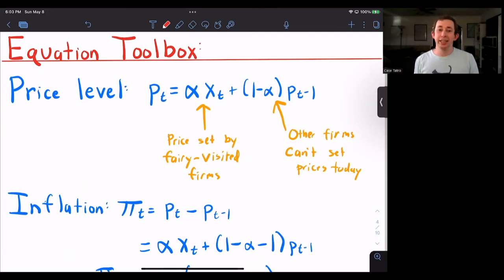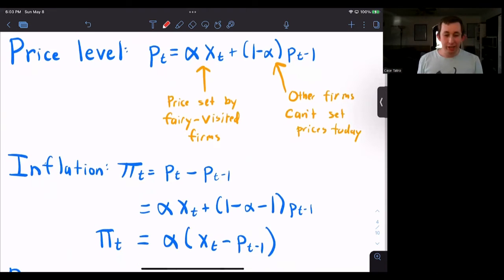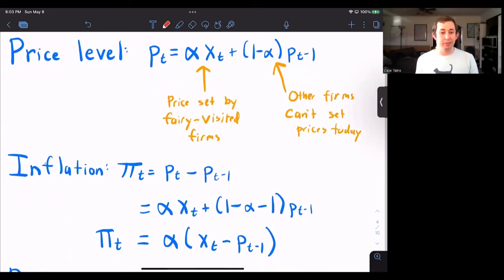So that's X sub T. And then the rest of the firms are one minus alpha. That is the price level from last period because those other firms can't set the price today.